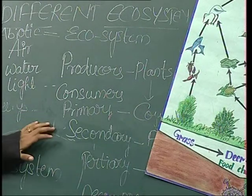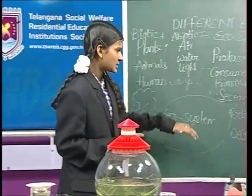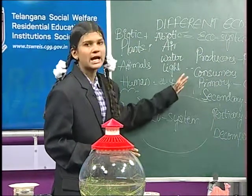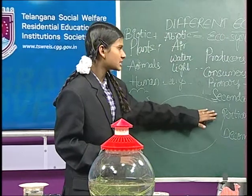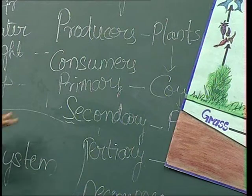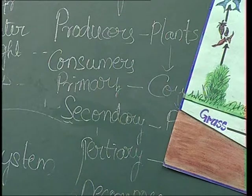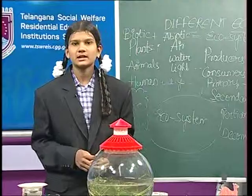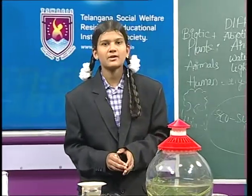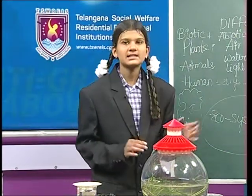Secondary consumers are carnivores; they depend on herbivores for food. The last type is tertiary consumers — these are the top carnivores that depend on both primary and secondary consumers. Examples: secondary consumers include fox, cheetah, etc.; tertiary consumers include lion, tiger, etc. The third category is decomposers. Decomposers like bacteria and fungi are called decomposers. Decomposers are also called recyclers.